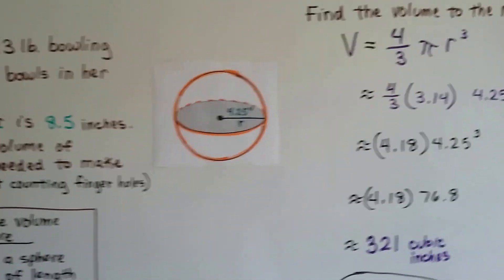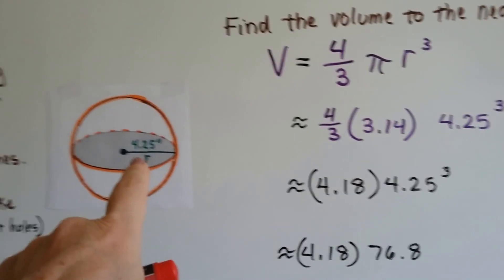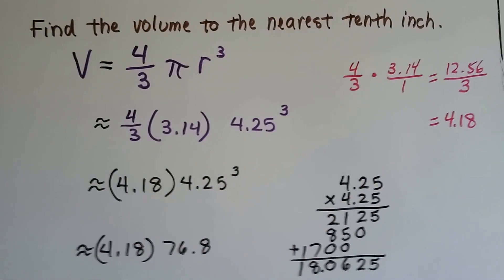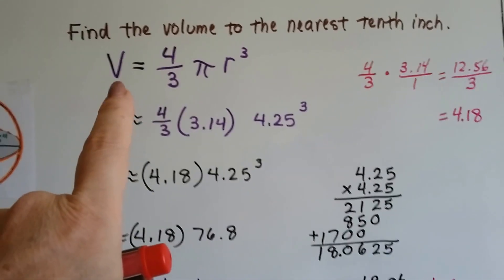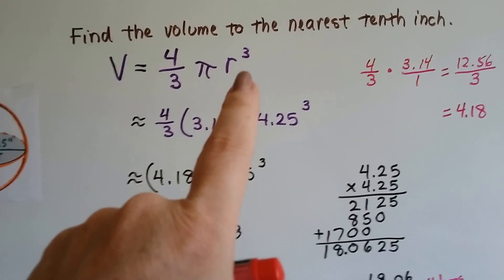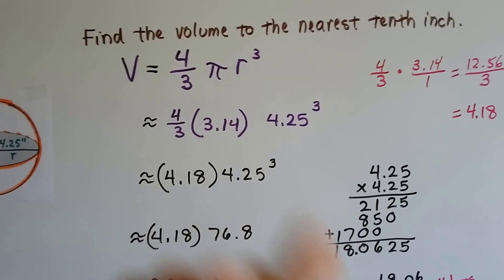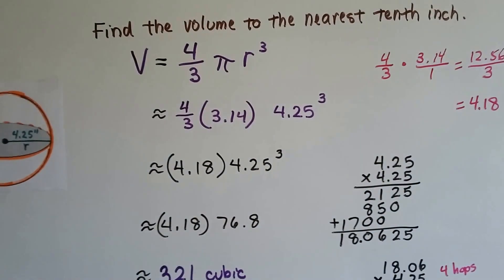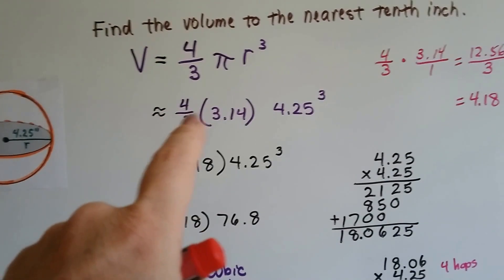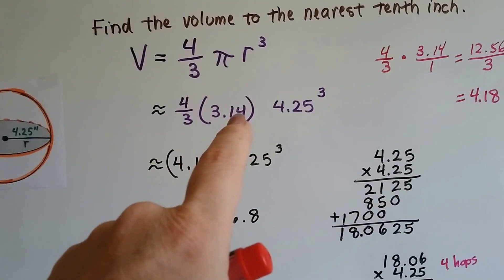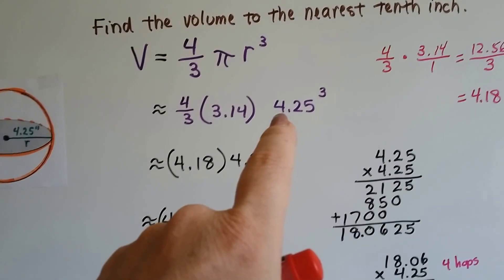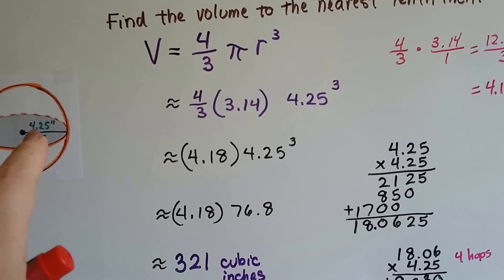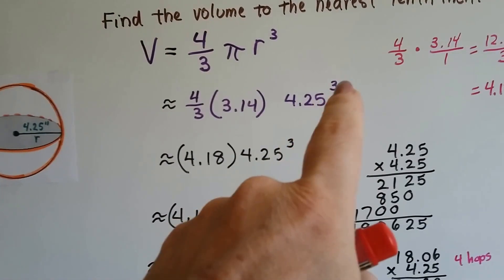We know that the radius of her bowling ball is 4.25 inches. We're going to find the volume to the nearest tenth of an inch using volume equals 4/3 times π times the radius cubed. Because we're doing π, it's going to be approximate, because π has so many digits. So we've got 4/3 times π as 3.14, and then it needs to be multiplied to 4.25 cubed.